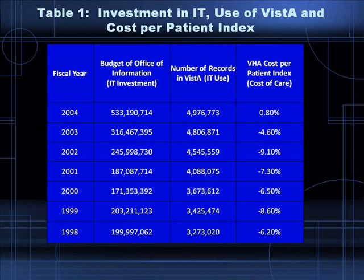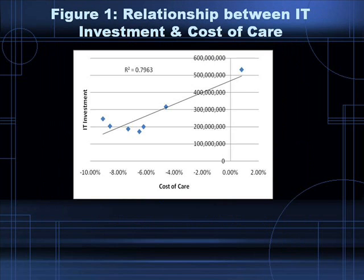Collected over a seven-year period, the data in Table 1 was received from the VA's VISTA system on October 16, 2007. The calculations have been taken from the budget of the information unit within the Veterans Administration and the number of patient records in the VISTA database. From the data given, a scatter diagram showing the relationship between IT investment, also known as the budget of the Office of Information, and the cost of care, known as the VHA cost per patient index, has been analyzed.